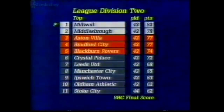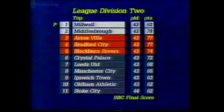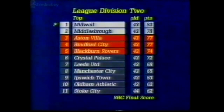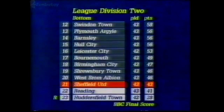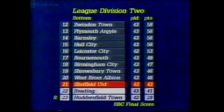That's the top of Division 2. The little P means Millwall are promoted. Middlesbrough are in the other promotion place. Aston Villa, Bradford City and Blackburn Rovers are in the playoff positions at the moment. Reading can still scrape into the playoffs if they do the business in their next games.